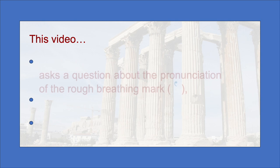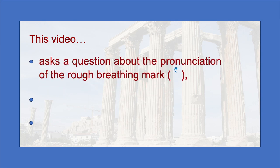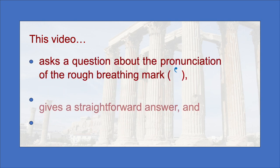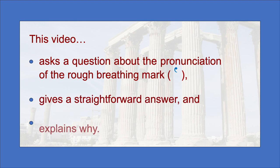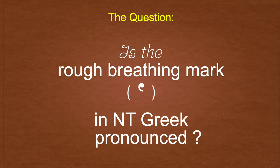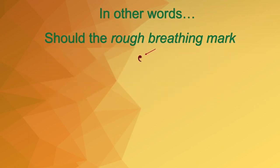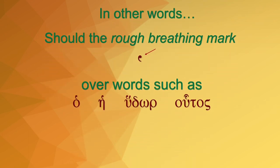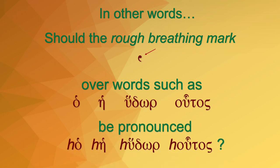This video asks a question about the pronunciation of the rough breathing mark, gives a straightforward answer, and explains why. The question is: is the rough breathing mark in New Testament Greek pronounced? In other words, should the rough breathing mark over words such as O, E, Hidhor, Utos be pronounced something like Ho, He, Hidhor, Utos?